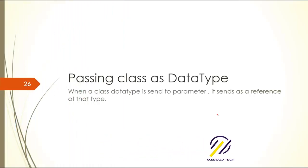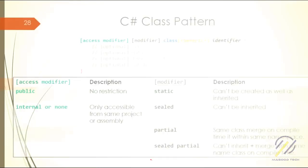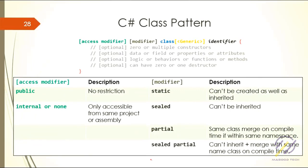When you pass a class as a function parameter, it passes as a reference type so you don't confuse with value type or reference type. Finally, this is the class pattern that you have seen so far.